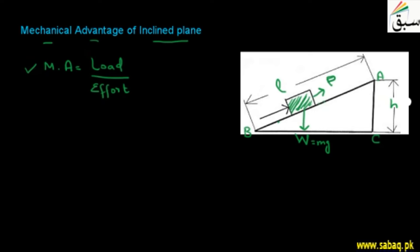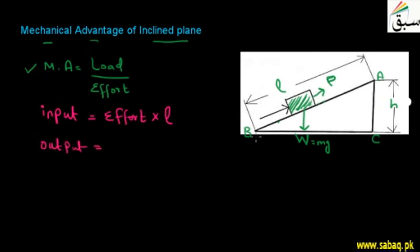If I look at the input, I am applying effort or force P in the inclined plane along the distance L. In terms of output, my load is being lifted through a vertical height H. So the input is the effort applied over distance L, and as a result the output is the load being lifted up to the height I want to reach. The inclined plane is the machine that helps me do this.